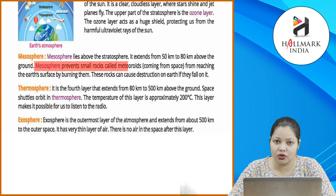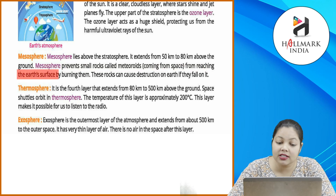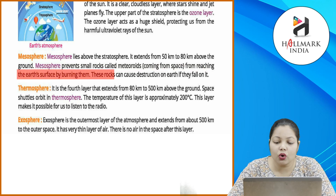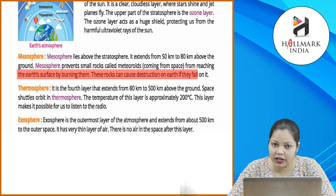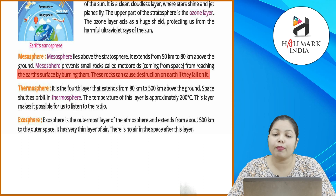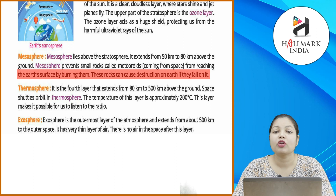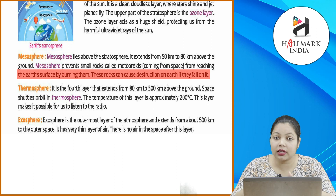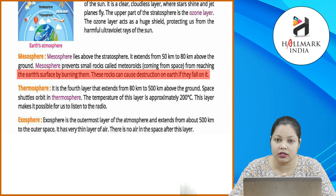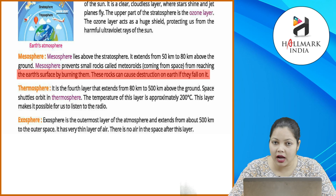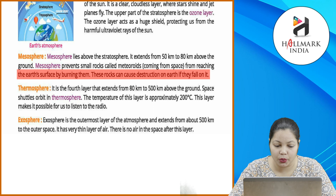Mesosphere: the mesosphere prevents small rocks called meteoroids coming from space from reaching the earth's surface by burning them. Those rocks can cause destruction on earth if they fall on it. Mesosphere jo layer hoti hai, wo protect karti hai meteoroids ko — jo ki space mein hote hain — unhe earth ki layer par aane se. Agar wo earth par aa jaenge, to aapki earth destroy ho jaegi.